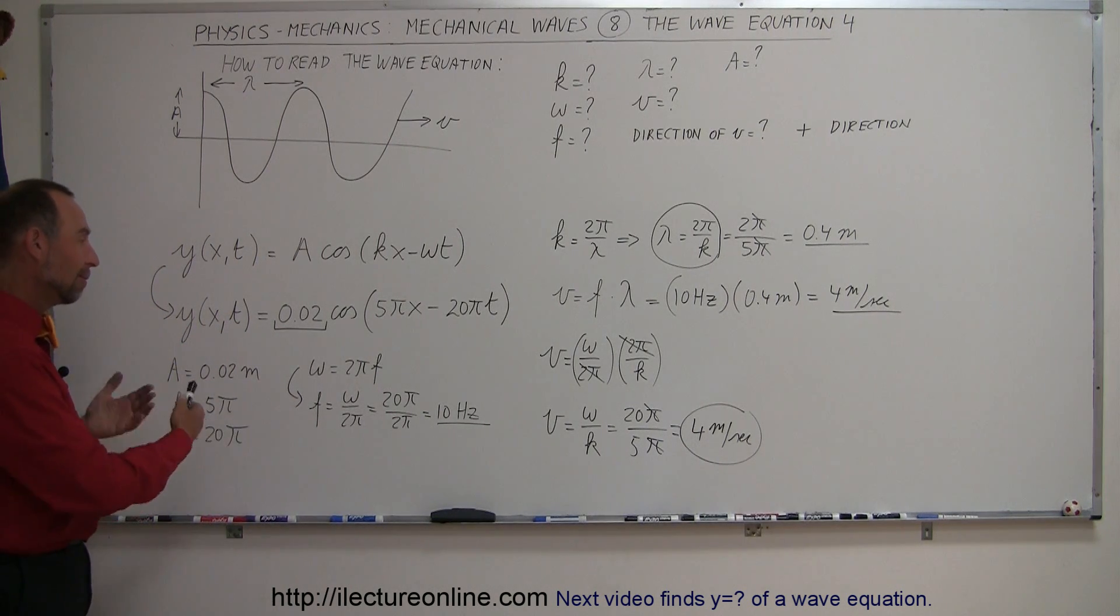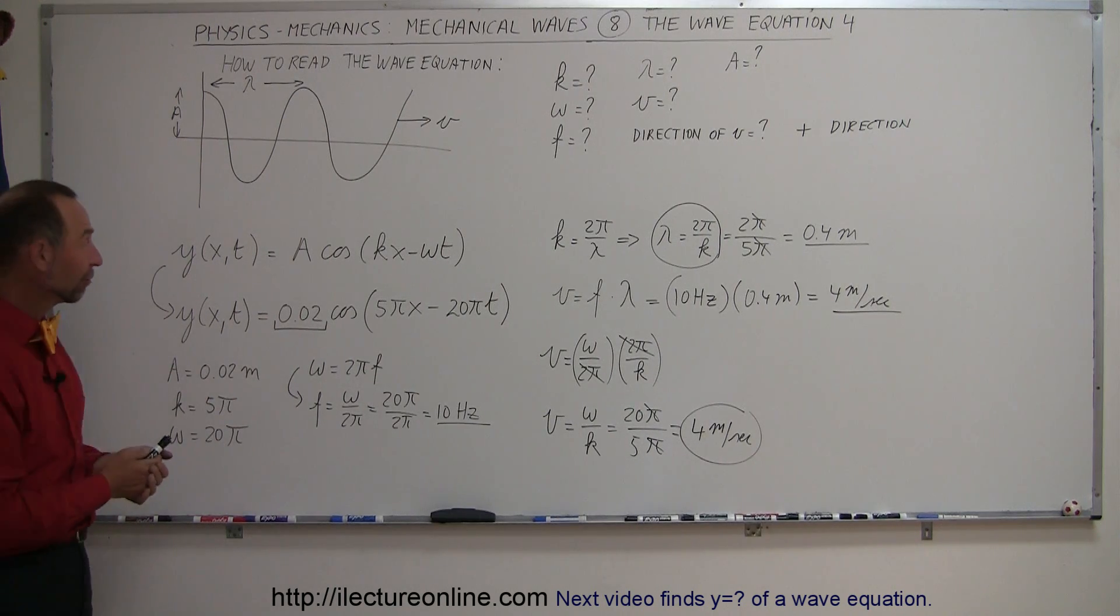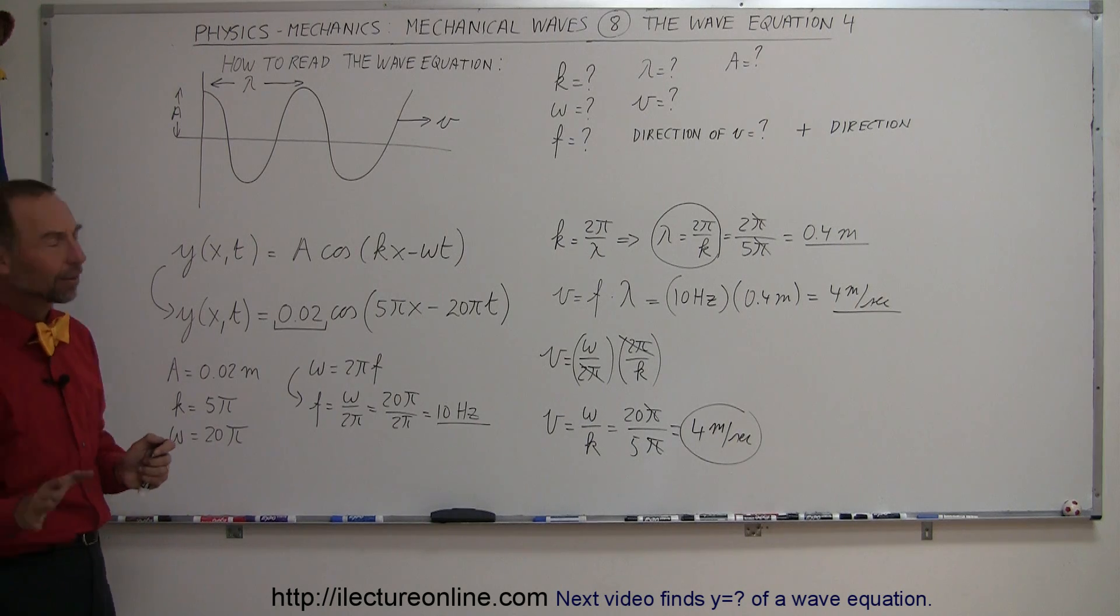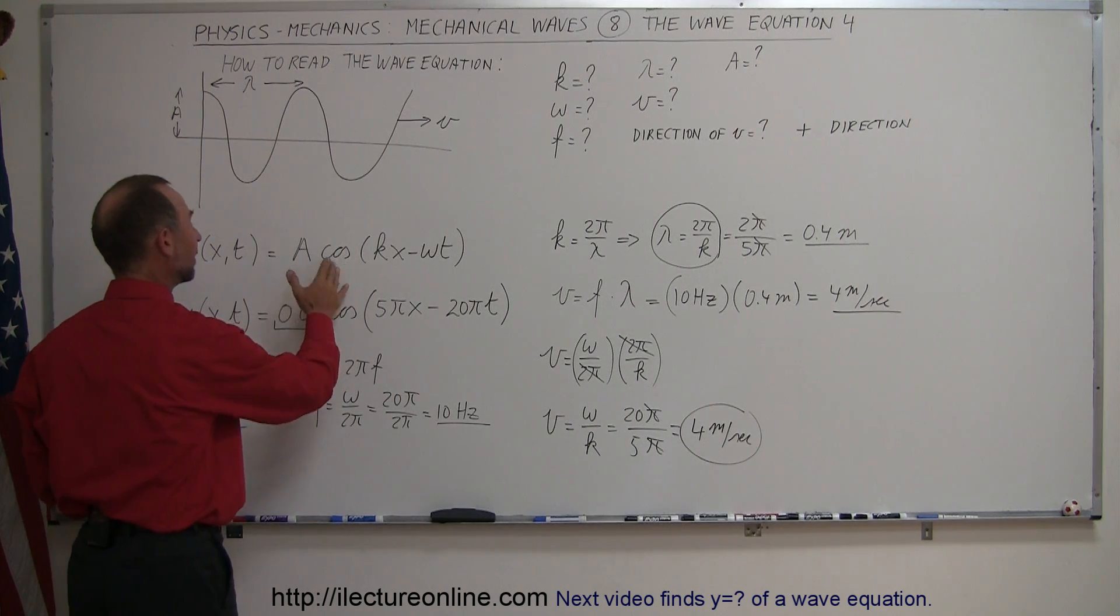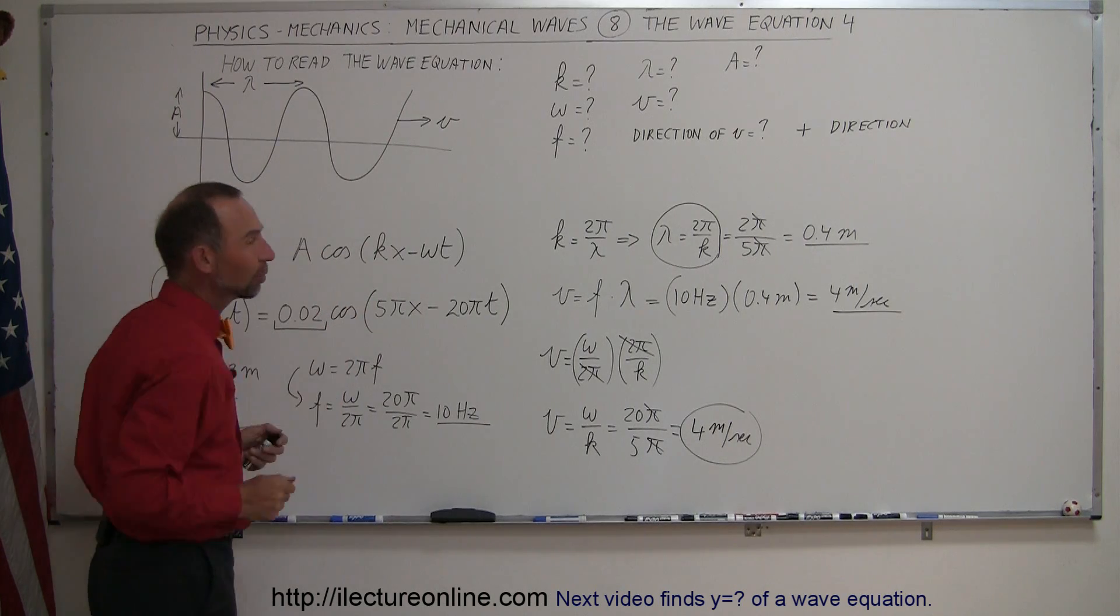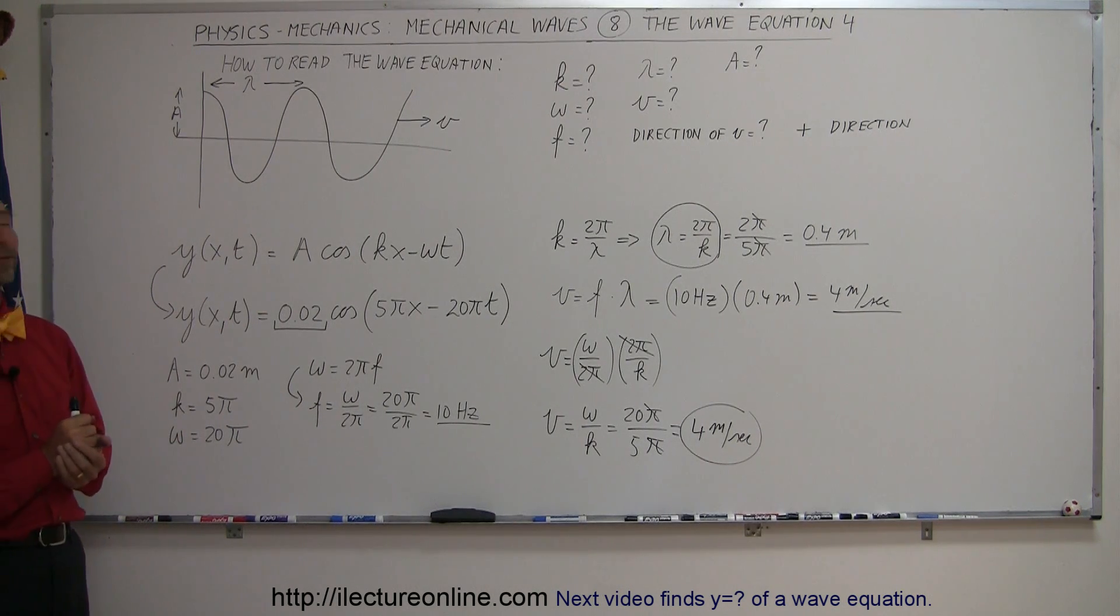So hopefully this video makes it a lot easier to read and understand the wave equation in the form A cosine of kx minus omega t. And again, it doesn't matter if this says cosine or sine, it just simply means that the position of the wave shifts at t equals zero. Other than that, you have the exact same wave equation and the exact same ways of finding all the various aspects of your wave.